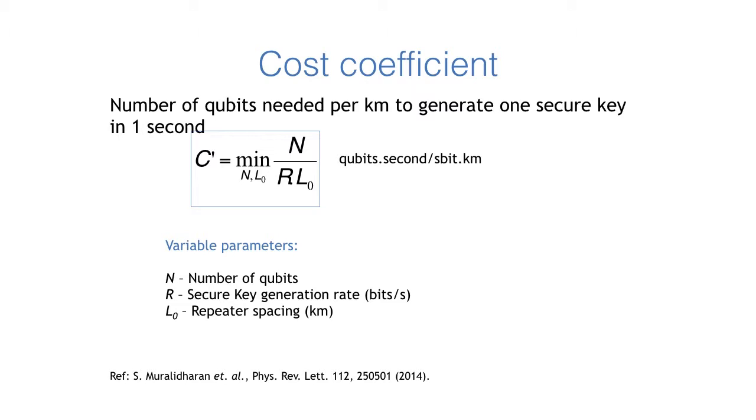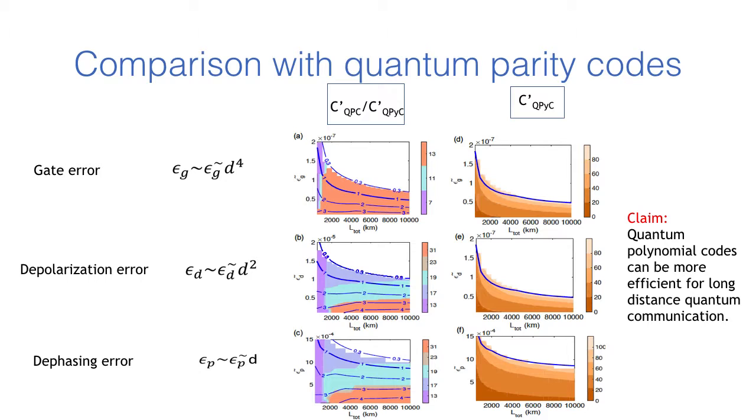For the sake of comparison between different codes for quantum repeater applications, we have a cost coefficient which is given by the number of qubits required per kilometer to generate one secure bit in one second. We can compare the qudit based and qubit based schemes by assuming that each qudit of d levels can be mapped into log d to the base 2 qubits.